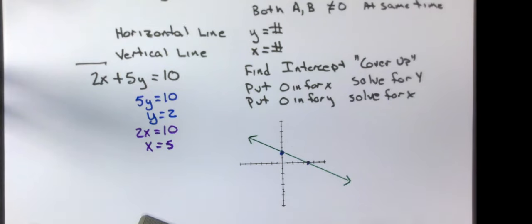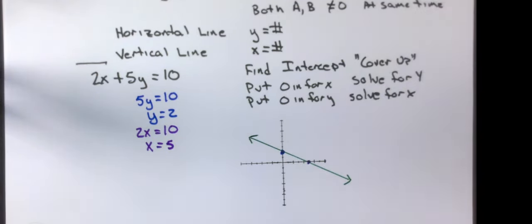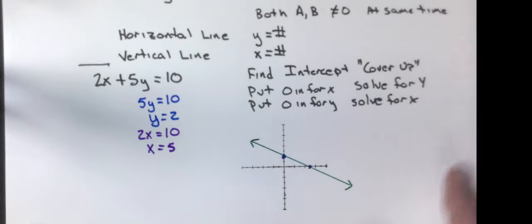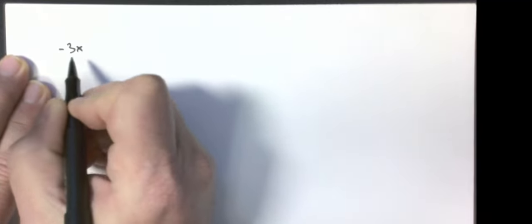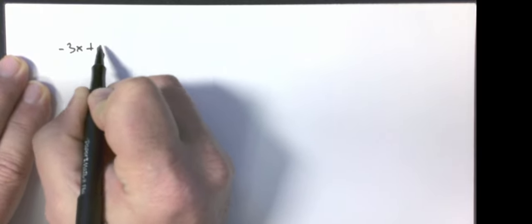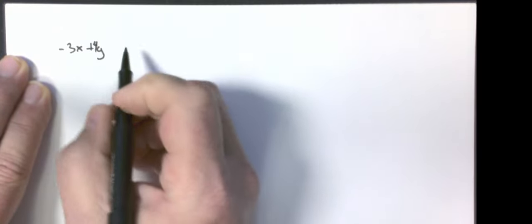I'm going to do one more example on here, then I'm going to go through your iXLs. Next example I am going to do is negative 3X plus 4Y equals 16.